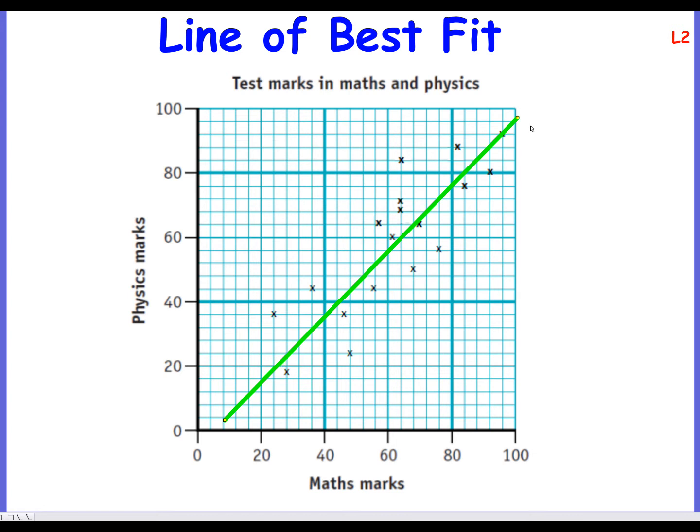The most important thing is that it balances both sides off. The line of best fit is a straight line that goes as close to as many of these as possible. Now it's going to be different for every student, but it does need to be in this kind of area here to be correct. And again, because it's our physics against maths diagram, it is positive correlation.